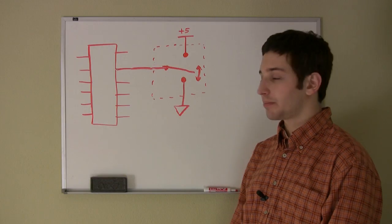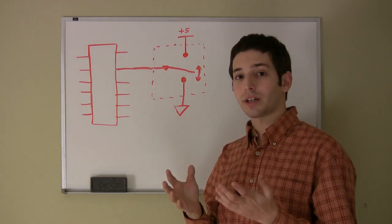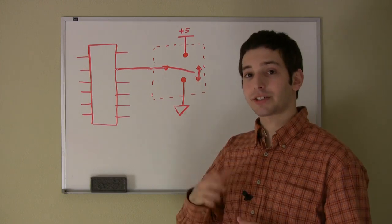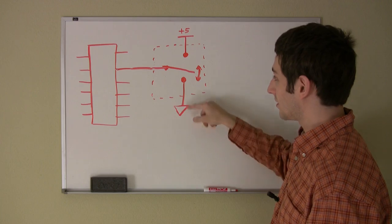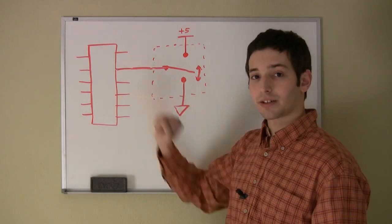A microcontroller's input pin reads a voltage and uses that to generate a binary 0 or 1 that the microcontroller code can use. So how can we use a switch opening or closing to create a changing voltage? One way is we could connect one side of the switch to ground, the other side to plus 5 volts, and connect the common terminal directly to the microcontroller input.